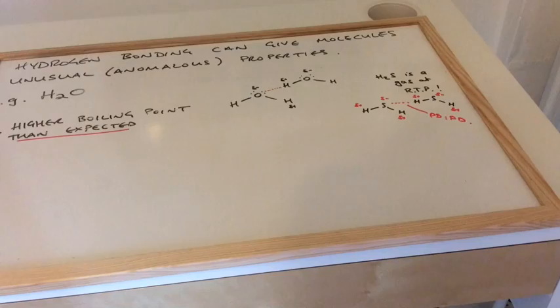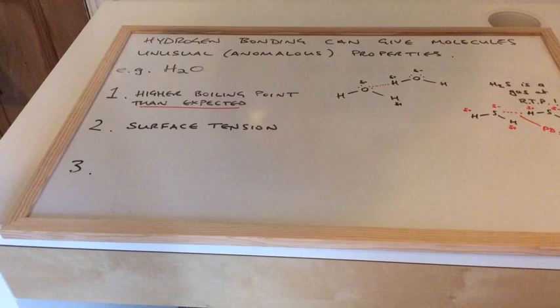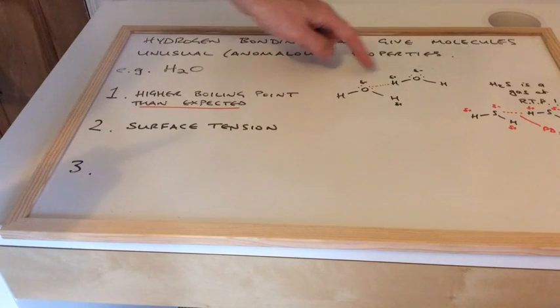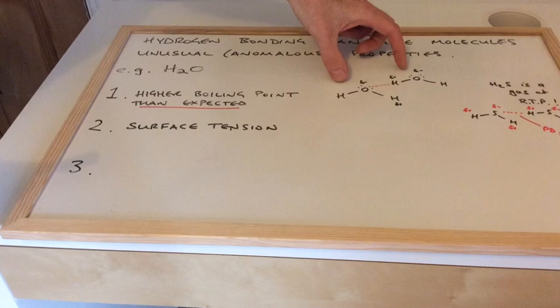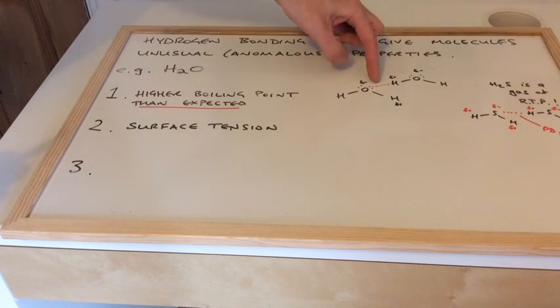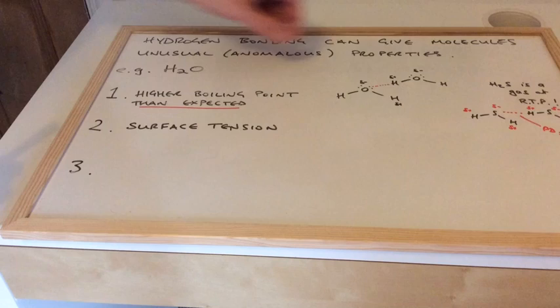The second anomalous property of water is that it has surface tension. I'll just use the same diagram here. If you imagine a very small insect like something like a pond skater or something like that, the water molecules are held together by these hydrogen bonds to such an extent that these creatures can actually walk on the water.